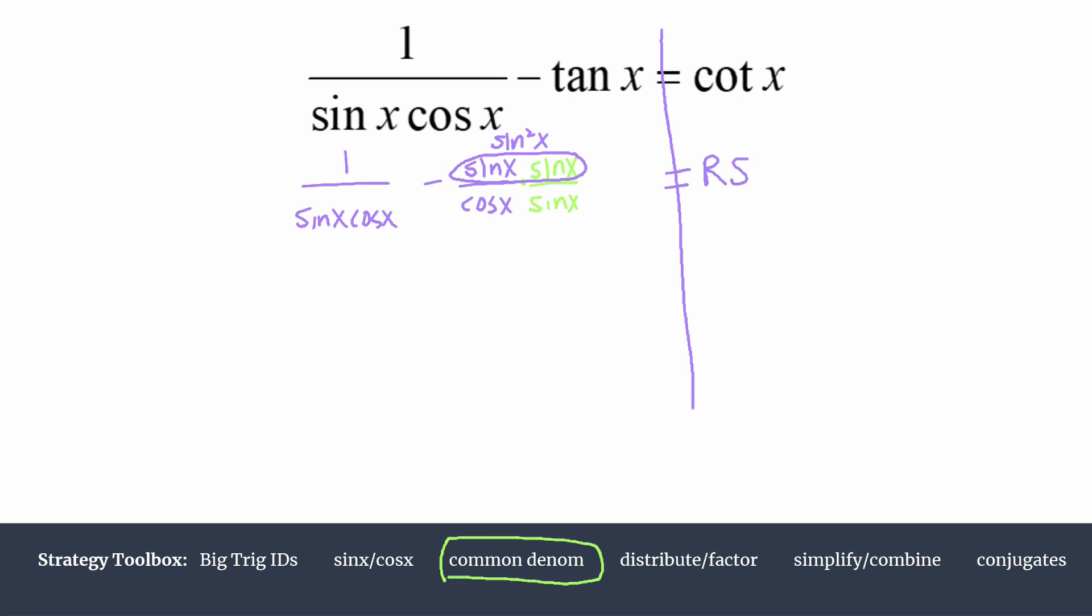We have 1 minus sine squared in the numerator, all over the common denominator of sine cosine. That equals the right side.